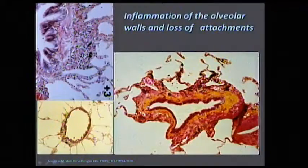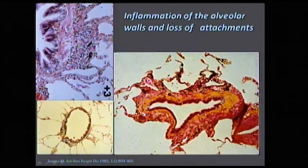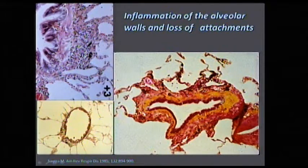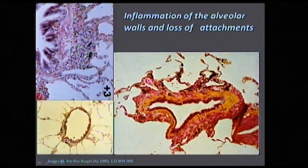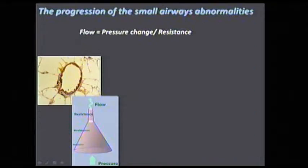At the end, the airways lose their attachments. You can see how these airways attach to the lung — every time we breathe, we open the airway by pulling. These attachments get very inflamed and eventually break, and we end up with an airway that is not suspended by the lung. So when we take a breath, the airway doesn't open, and that contributes again to the abnormality of the lung.